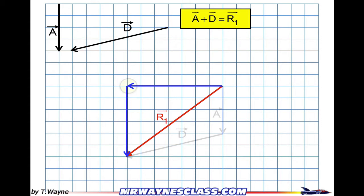But notice that these two vectors also connect tip to tail. And they are components of R1 because they add up to give me the answer of R1. They're just different from A and D. So here's my right triangle that I've made with R1 as the hypotenuse.